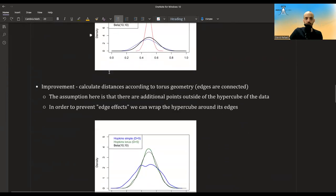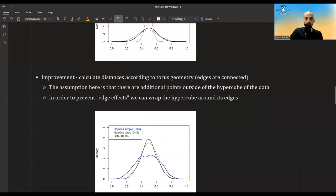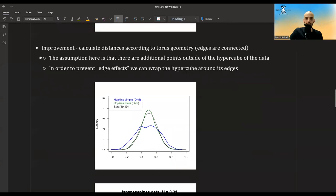Another thing in this paper is that they mentioned some improvement that you can do, which is instead of calculating regular distances, you could use torus geometry where the edges are connected. So the assumption here is that there are additional points outside of the hypercube of the data. And in order to prevent edge effects, we can wrap the hypercube around its edges.